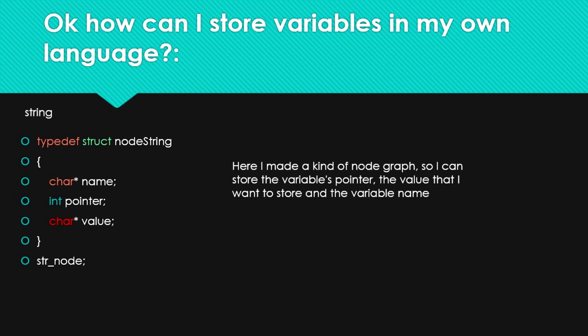How can I store variables in my language? It's easy. Here I made a kind of node graph — you can see: 'typedef struct node string', with char name, int pointer, and value. So I can store the variable's pointer, the value, and the name. When I want the value, I can look up the name and follow the pointer to the value and get it. It's a little unusual, but you can understand it if you look up node graphs on Google.